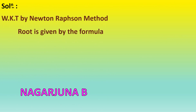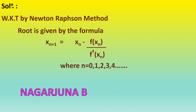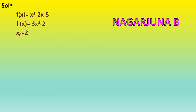We know that by Newton-Raphson method, the formula to find the root of an equation is xₙ₊₁ = xₙ − f(xₙ)/f′(xₙ), where n = 0, 1, 2, 3, etc. We start with n = 0. So first find f(x₀) and f′(x₀).